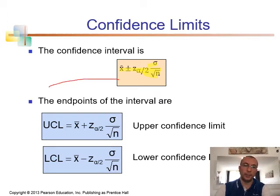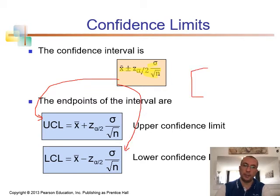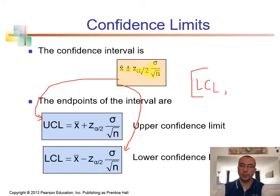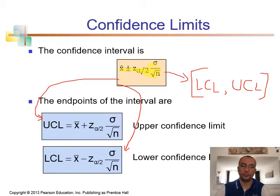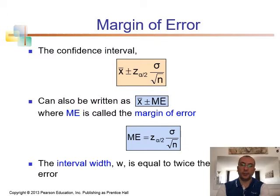The upper end of this confidence interval is called the UCL (Upper Confidence Limit) and the lower end is called the LCL (Lower Confidence Limit). On the left side we have the lower confidence limit (LCL) and on the right side we have the upper confidence limit (UCL). Both are based on the same formula. The confidence interval formula can also be written as x-bar plus or minus the margin of error.